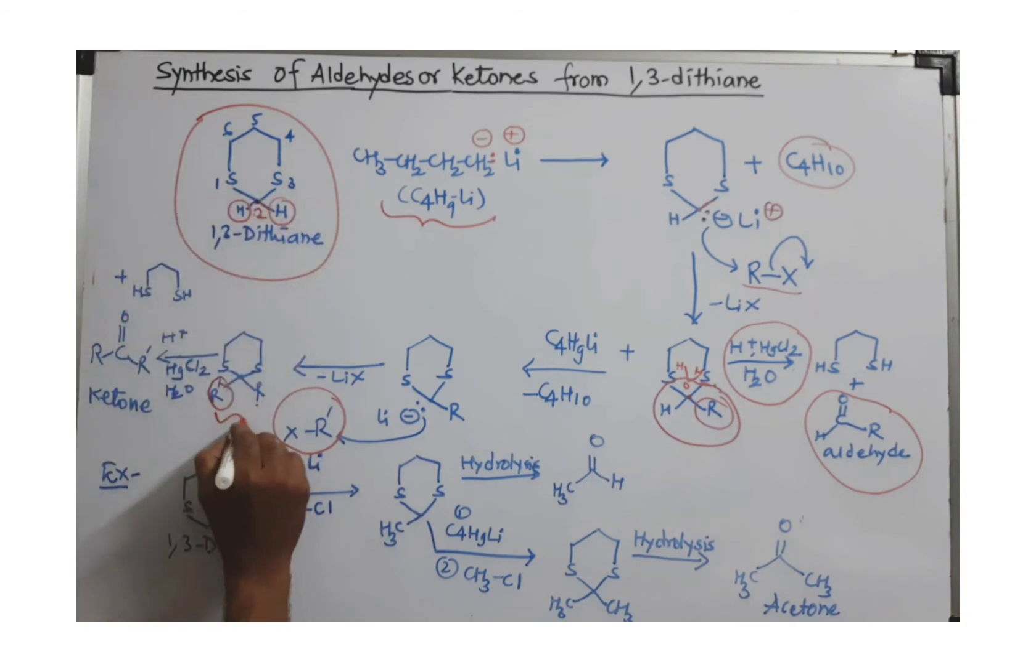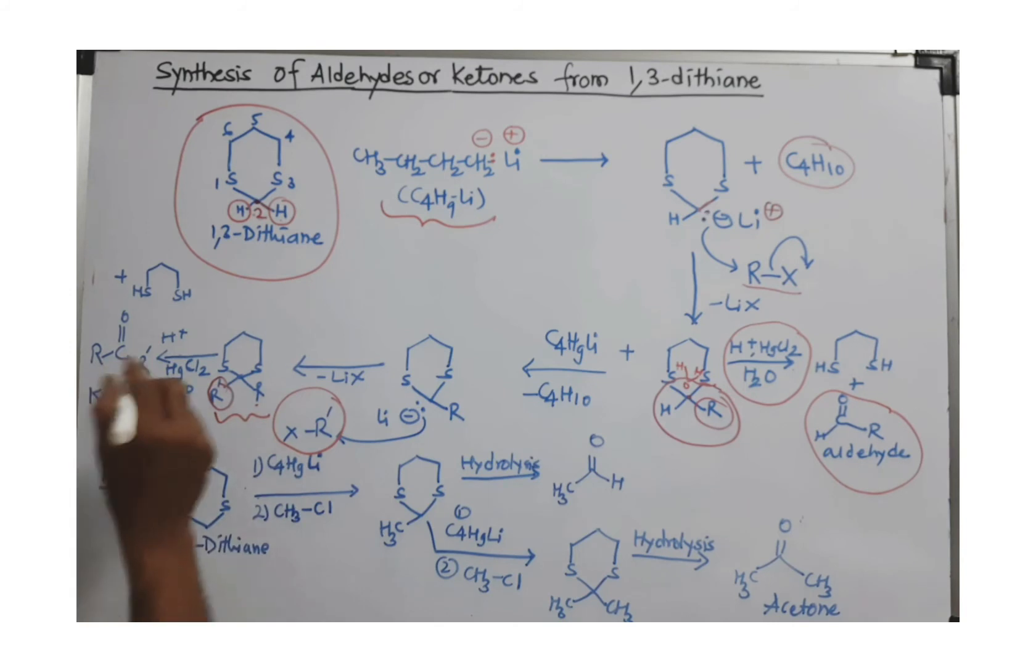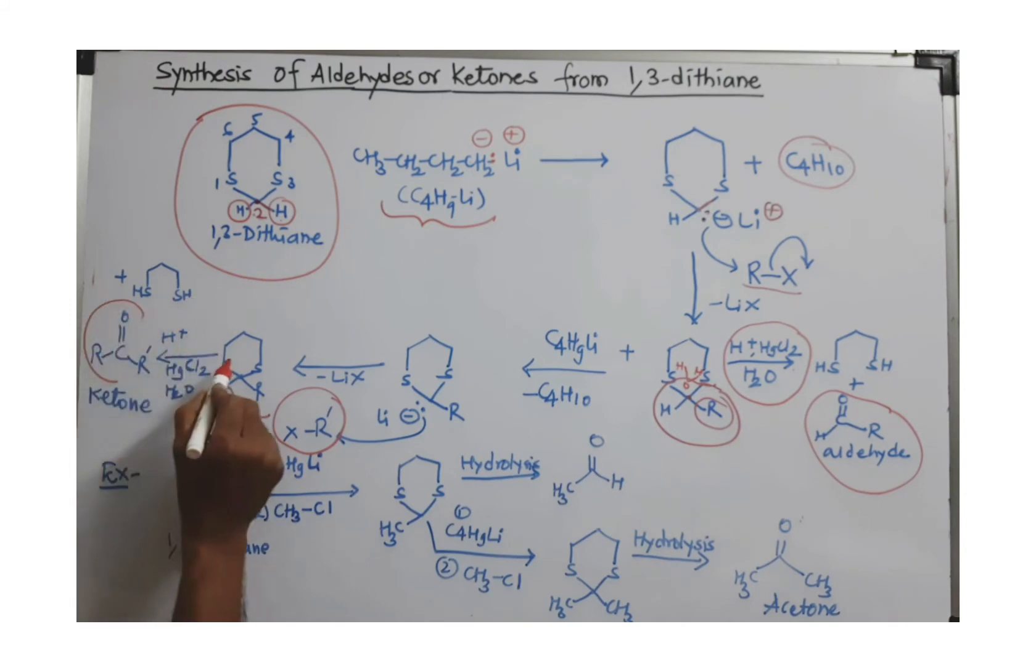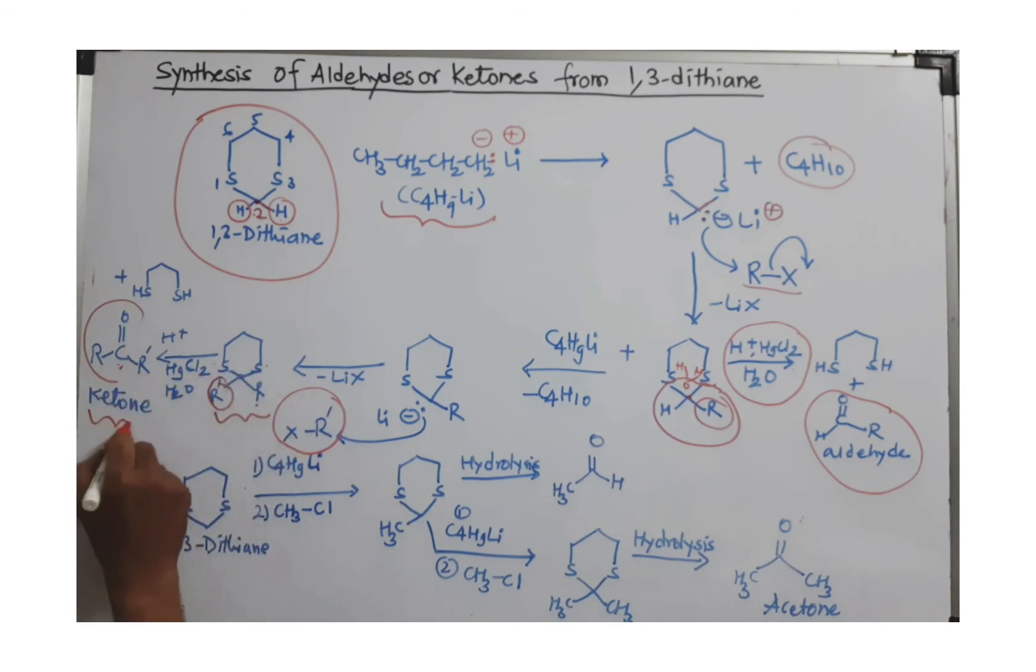Here we have both hydrogens replaced with alkyl groups. Now do the next step: hydrolysis by using mercury chloride in aqueous acid, and we get this ketone. From water, two H you have to join on sulfur, remove that, detach carbon number 2, and join oxygen by using a double bond to get this ketone.